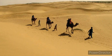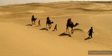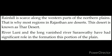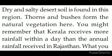But in the western part of these plains, rainfall is very scarce. That's why most regions in Rajasthan are deserts. This desert is known as the Thar Desert. The Luni river and the long-vanished river Saraswati are the forces behind the formation of this region. Dry and salty desert soil is found here, and thorns and bushes form the natural vegetation. The rainfall is very low, and you might remember that Kerala receives more rainfall in a day than the annual rainfall received in Rajasthan.